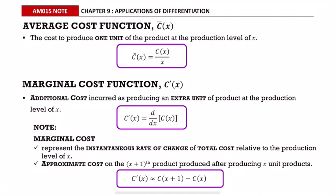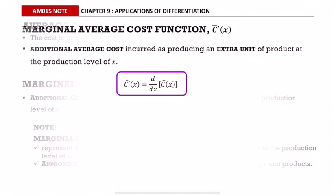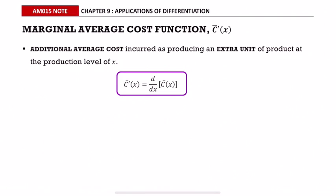It approximates the cost of the (x+1)th product produced after producing x units, or simply approximates c(x+1) minus c(x). Marginal average cost function is denoted as c-bar prime of x. It is the additional average cost incurred when producing an extra unit of product at production level of x. Marginal average cost function equals the differentiation of the average cost function.